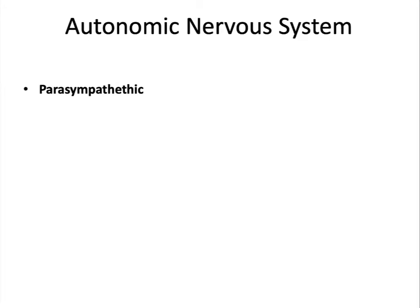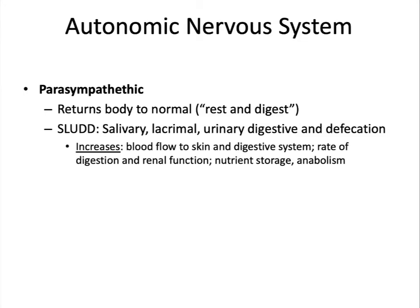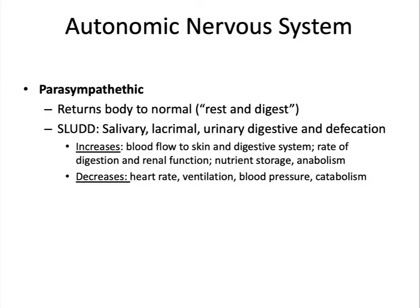The parasympathetic nervous system is used to return the body to normal — known as the rest and digest system. You can associate it with the acronym SLUD: salivary, lacrimal, urinary, digestive, and defecation. During this situation, it responds by increasing blood flow to the skin and digestive system, digestion and renal function, nutrient storage, and anabolism of macromolecules. The parasympathetic nervous system decreases heart rate, ventilation, blood pressure, and catabolism of nutrients.